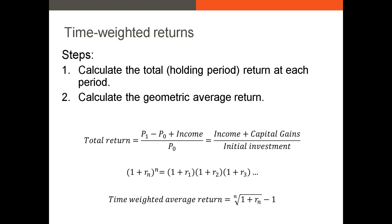The time-weighted return calculation involves two steps. First, you calculate the total return on the portfolio at each time period using the holding period return formula — meaning we add the value of the portfolio at the end of the period (P1) plus any income received during the period, minus the initial value, then divide by the initial value. Once you have the return for each period, you calculate the geometric average return over the entire period. The final point is that we're only calculating the return on a single share.